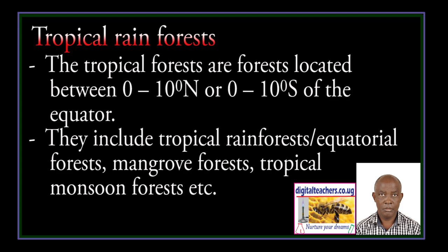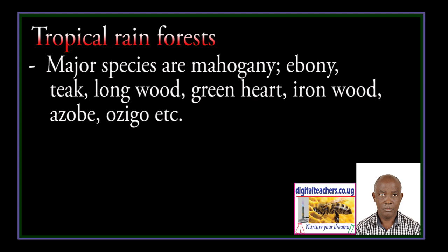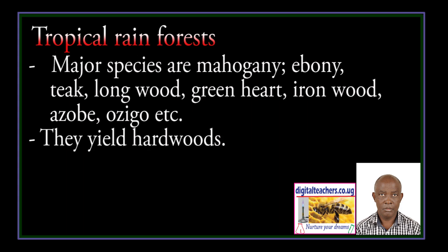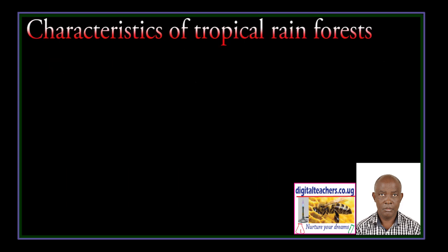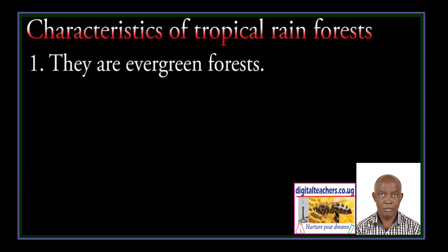Major species include Mahogany, Ebony, Teak, Longwood, Green Heart, Iron Wood, Azobe, Azigo, and so on. They are located in Brazil — for instance, Amazon Forests in the Amazon Basin — in DRC Congo in the River Basin, Gabon, Cameroon, Malaysia, Indonesia, and so on.